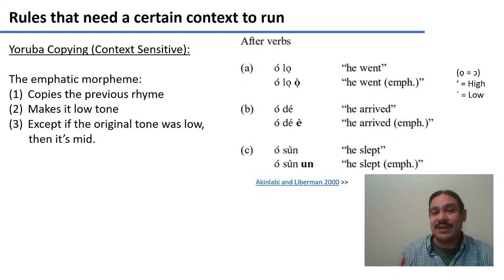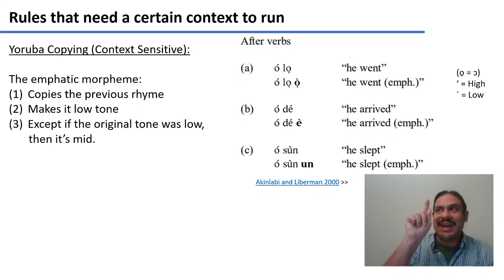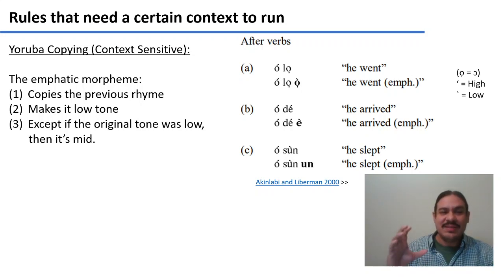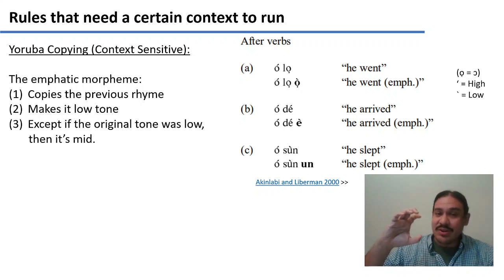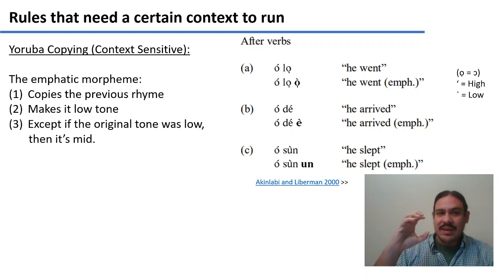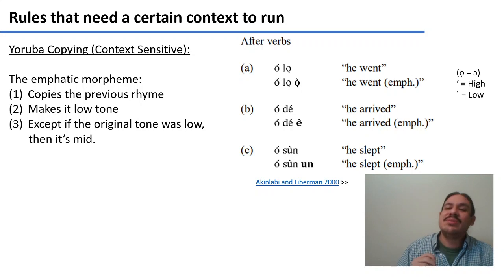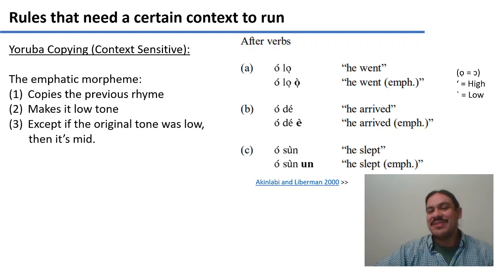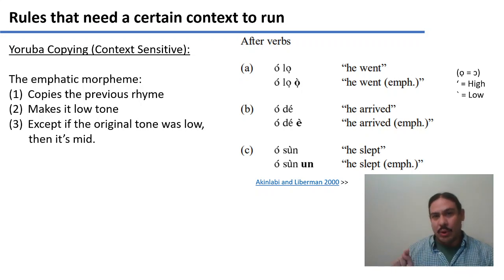Let's make the emphatic of sentence B, 'o-de,' meaning 'he arrived,' which is high-high tone. The emphatic would be the rhyme — the vowel E and any consonants it might have at the end (it doesn't have any). We take the E and turn the tone into a low tone. So the emphatic is 'o-de-e' — 'wow, he arrived' — with a tonal structure of high, high, low.